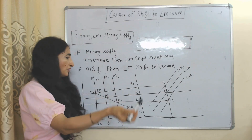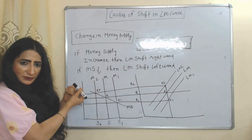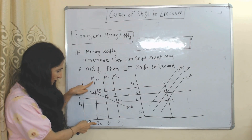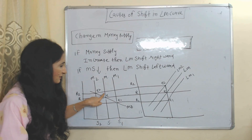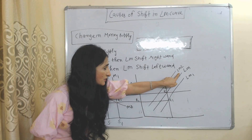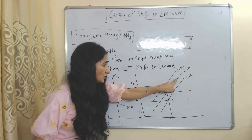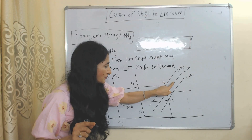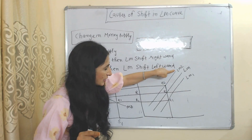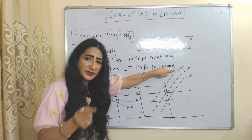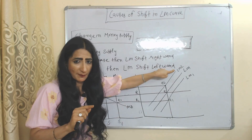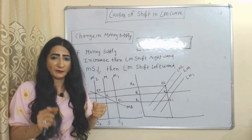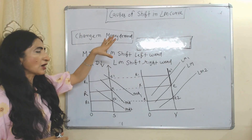When money supply falls, the new equilibrium point shifts accordingly. Due to the decrease in money supply, the LM curve shifts leftward from LM to LM2. So we can say that as money supply increases, LM shifts rightward, but as money supply falls, LM shifts leftward.